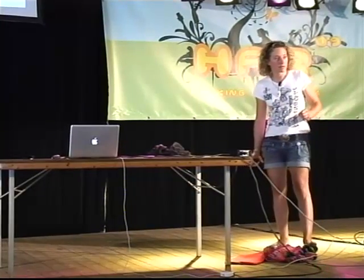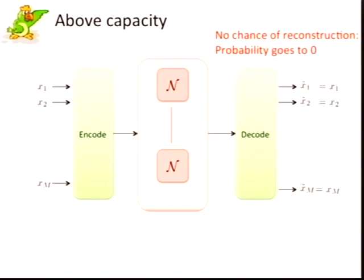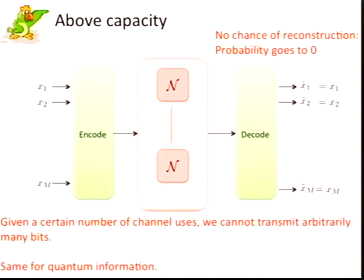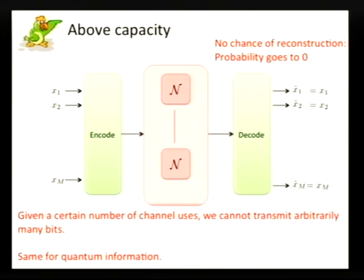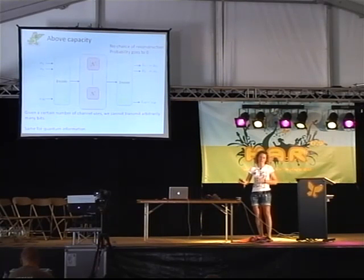It gets even worse: as you go above capacity — if you try to send too many bits — your probability of reconstruction, that you manage to get out exactly what came in, goes to zero if you try to send very many bits and the number of channels is large. The point is: given only a certain number of noisy storage bits, we cannot arbitrarily send arbitrarily many bits. And importantly, not only can we not send arbitrarily many bits — our chance of really getting out exactly what we put in is negligible. One can show, in fact we have shown, that the same holds for a large class of quantum channels.